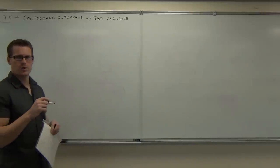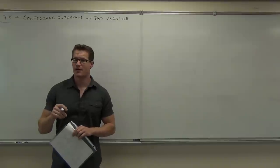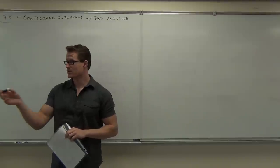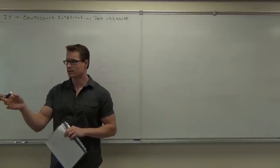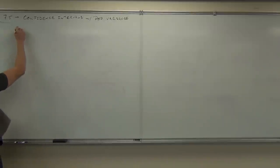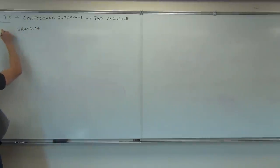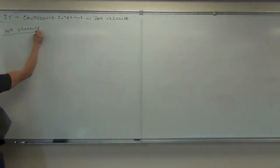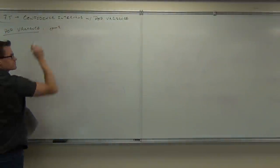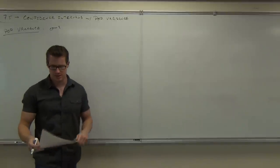What was the symbol for population variance? Sigma squared — so that's variance. Population variance, we're talking about sigma squared.